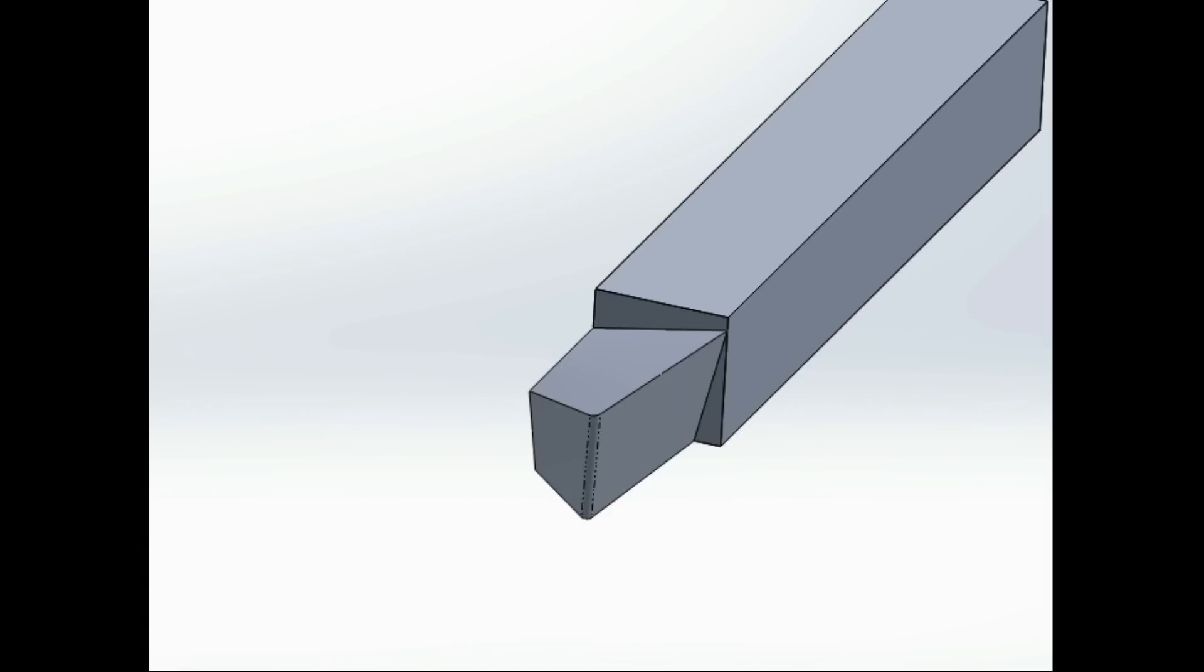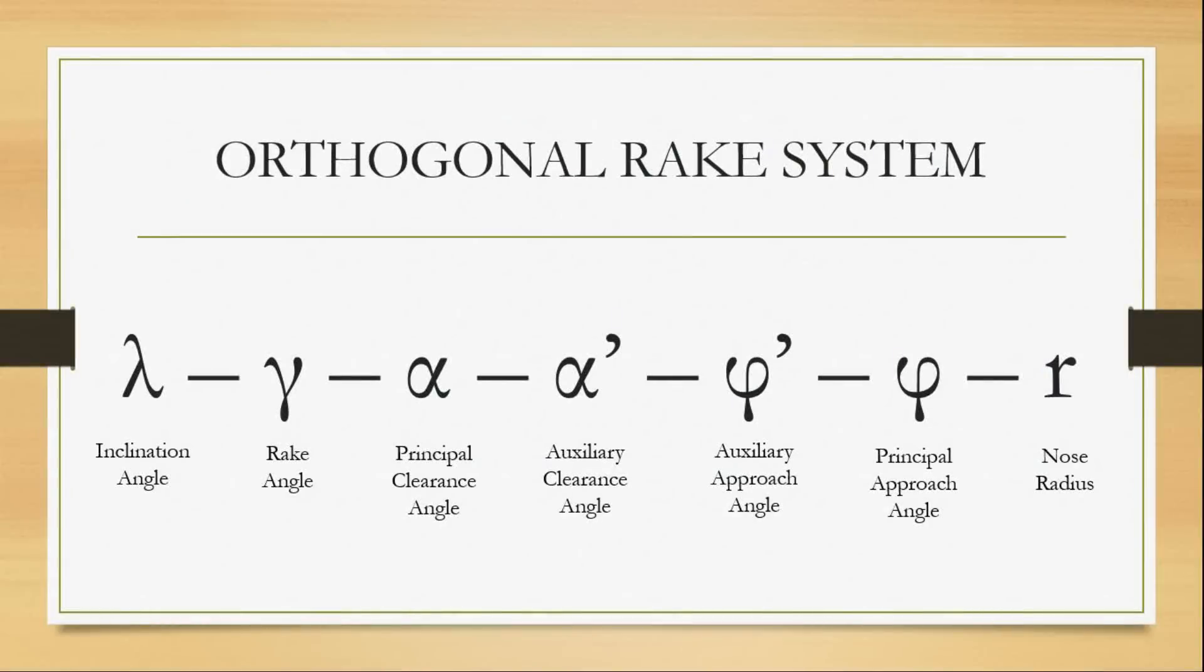Most tools also have a nose radius instead of a sharp edge. These six angles and the nose radius in a specific order give the tool geometry in the orthogonal rake system.